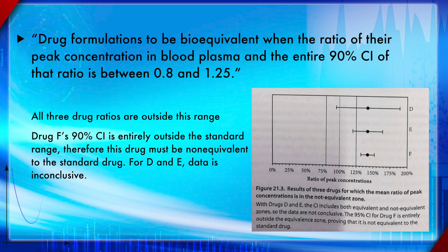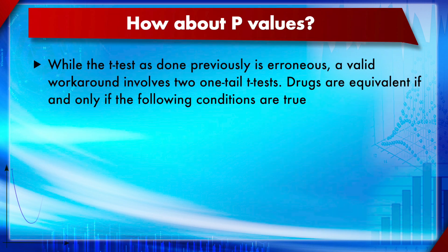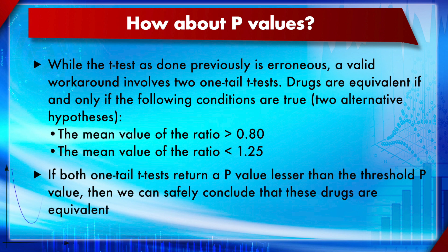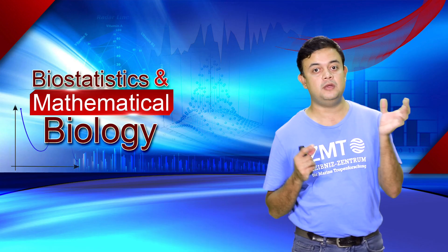Instead of the normal t-test, a valid workaround involves two one-tailed t-tests. Drugs are equivalent if and only if two alternative hypotheses are both supported: first, the mean value of the ratio is greater than 0.8; second, the mean value of the ratio is less than 1.25. If both one-tailed p-values return a value less than the threshold, we can conclude the drugs are equivalent.